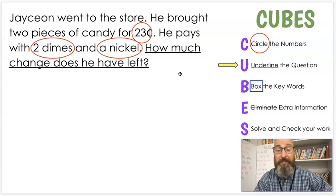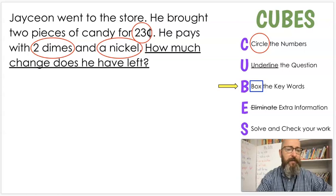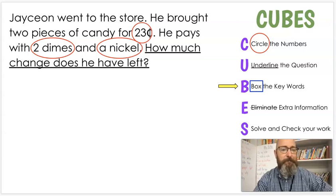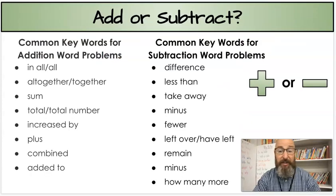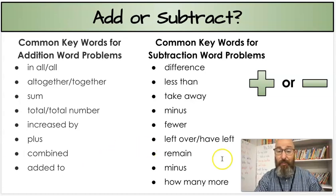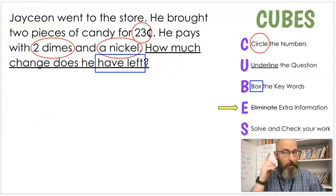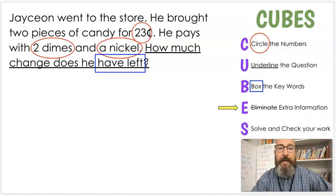All right, look for that question mark. Go back to the beginning of the sentence. How much change does he have left? Remember, don't stop here. Keep going till you see that capital letter, the first word of the sentence. And that lets you know if you see a period there, you know that's the first word. What's the next step? B. That's right. B is what? Box the keywords. Do you see any keywords in this one?